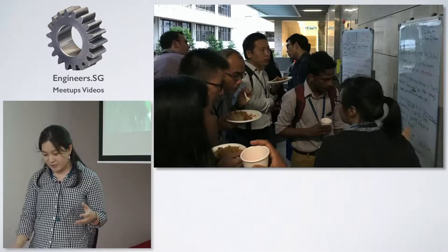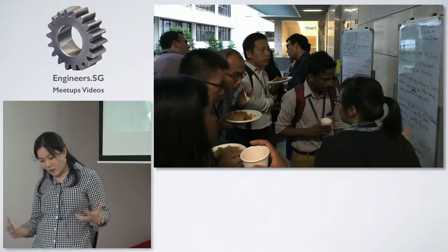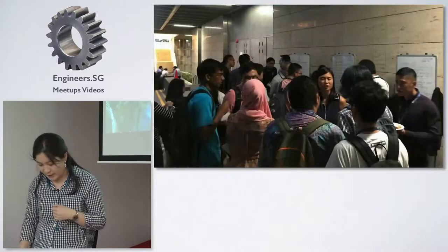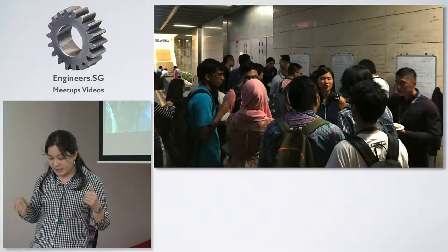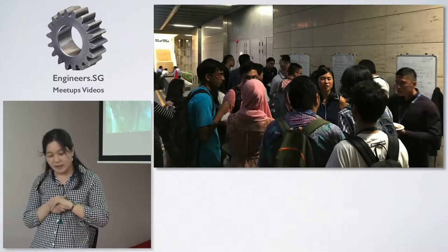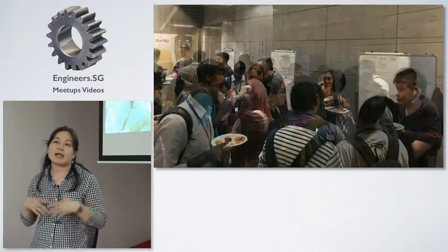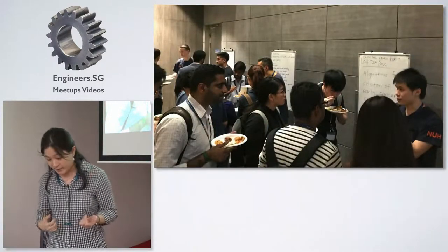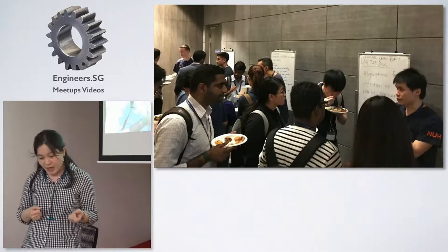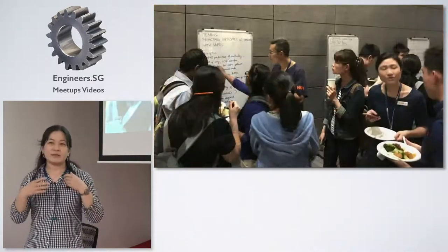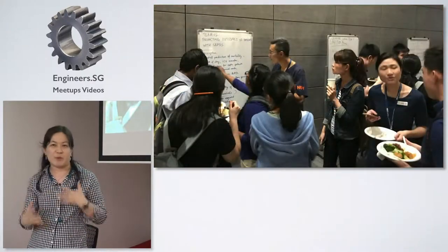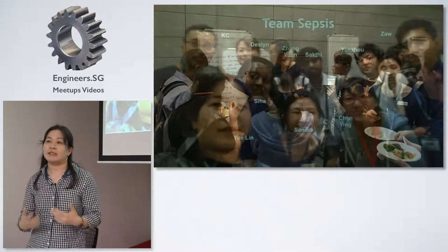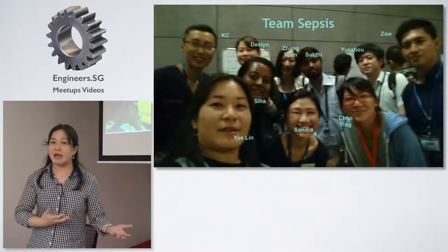At the start of the event, two sets of databases were offered: one from the Philips EICU Collaborative Research Database, and the other is the MIMIC Medical Information Mark for Intensive Care. Both these databases are intensive care data from patients in ICU. The NUHS data turned out to be very different because they didn't have time to prepare it, and it turned out to be patient history rather than ICU data.